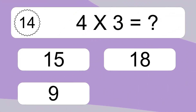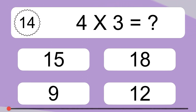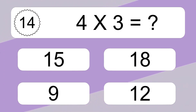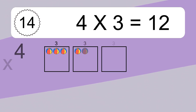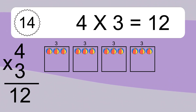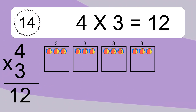4 times 3 equals what? 4 times 3 equals 12. We have 4 boxes, and each box has 3 colorful balls inside. If you count all the balls in all the boxes together, you will have 4 times 3 balls. This equals 12 balls.